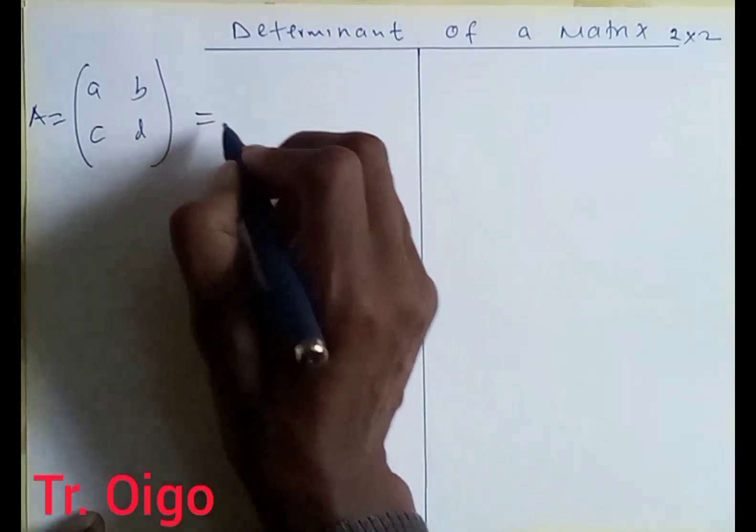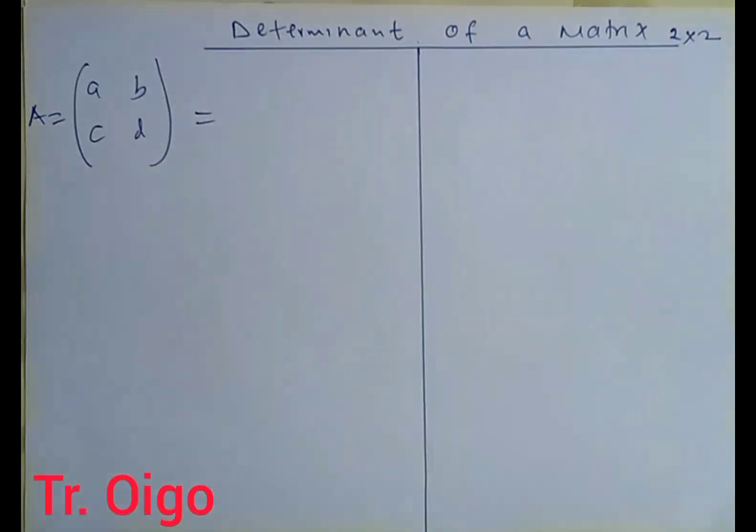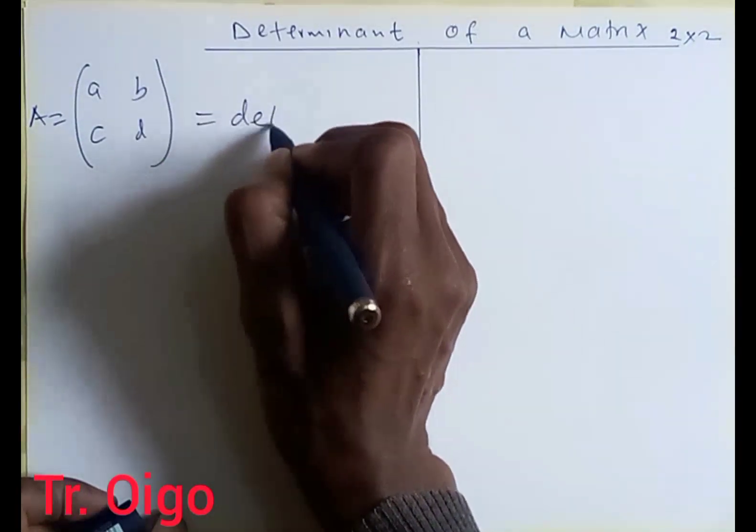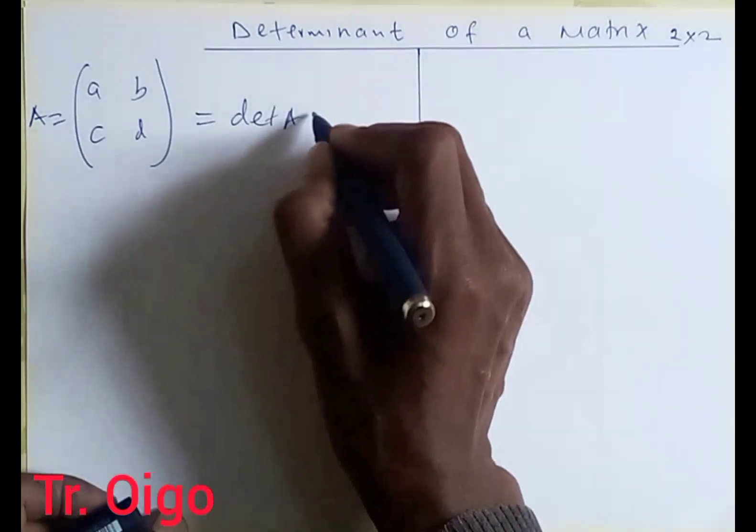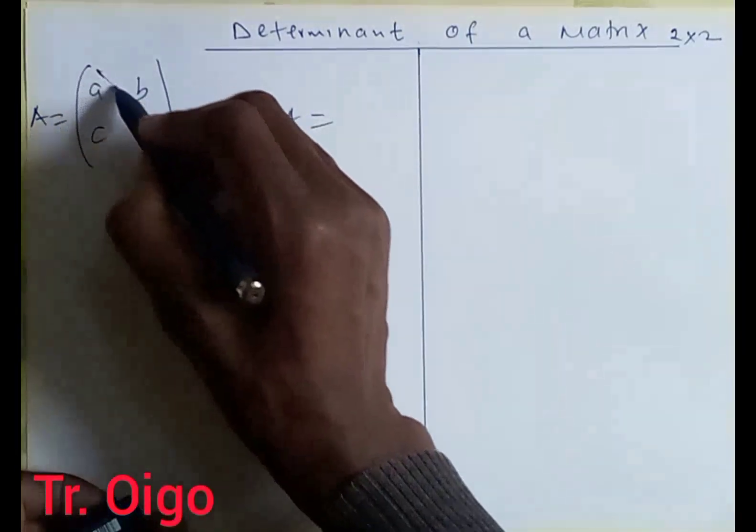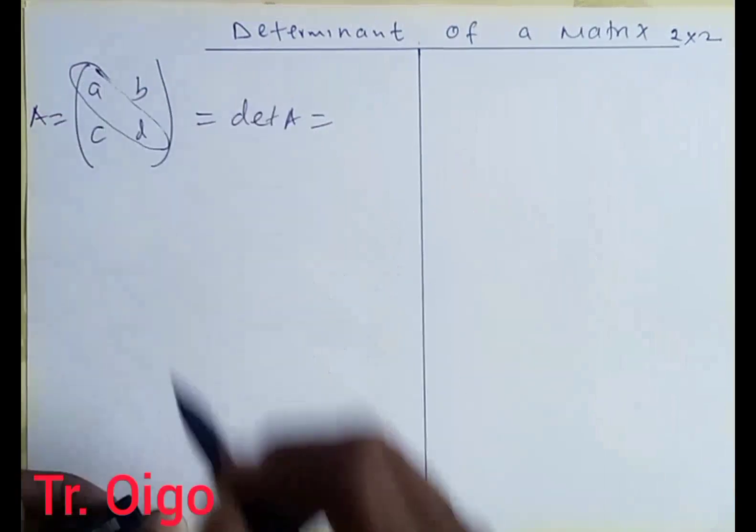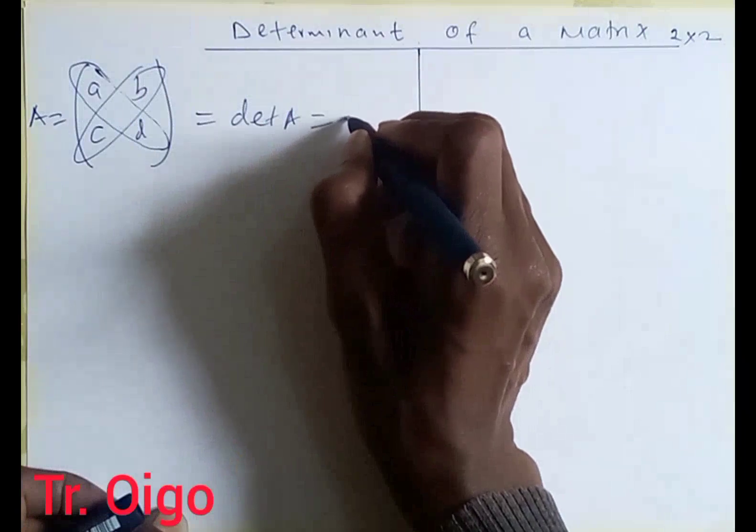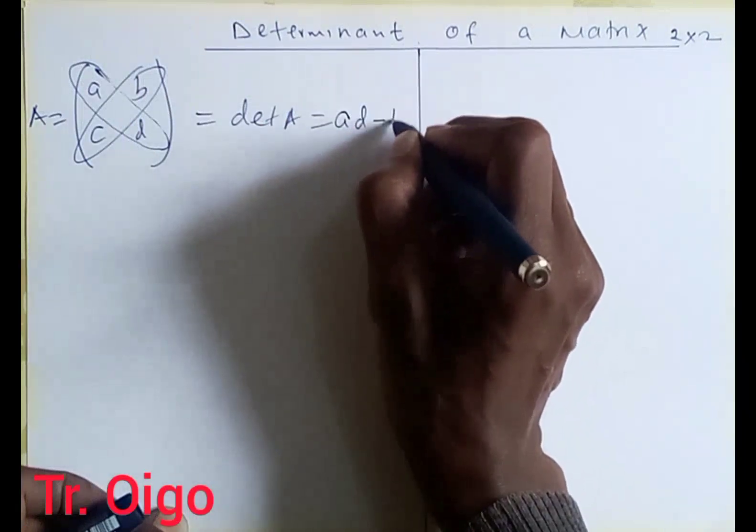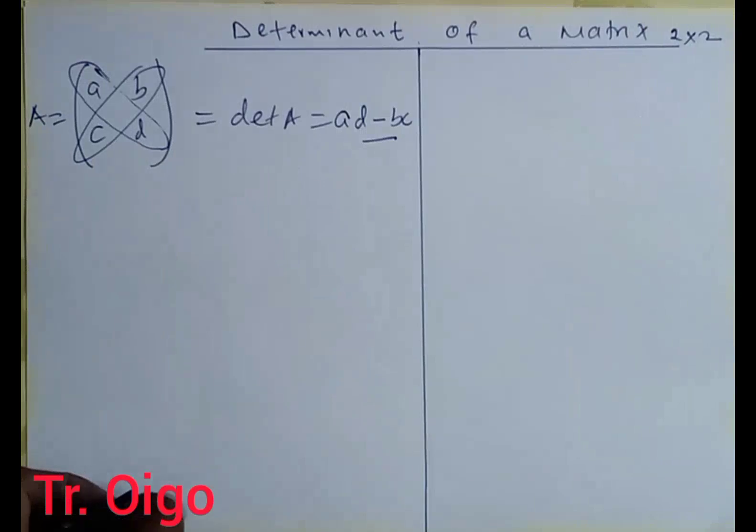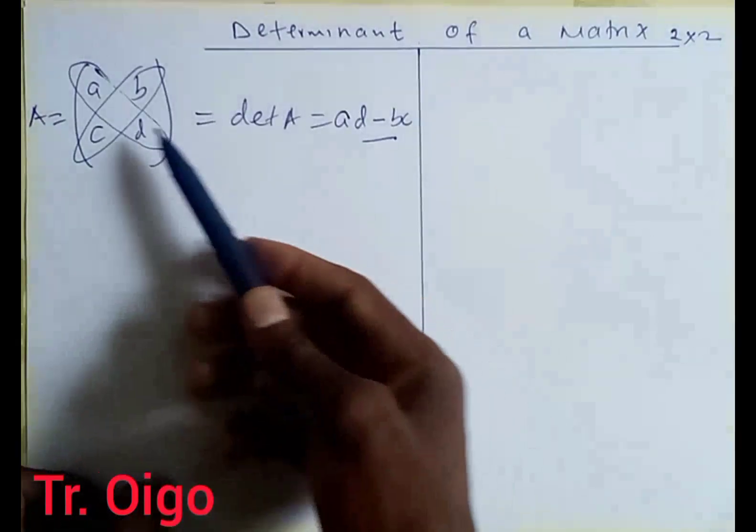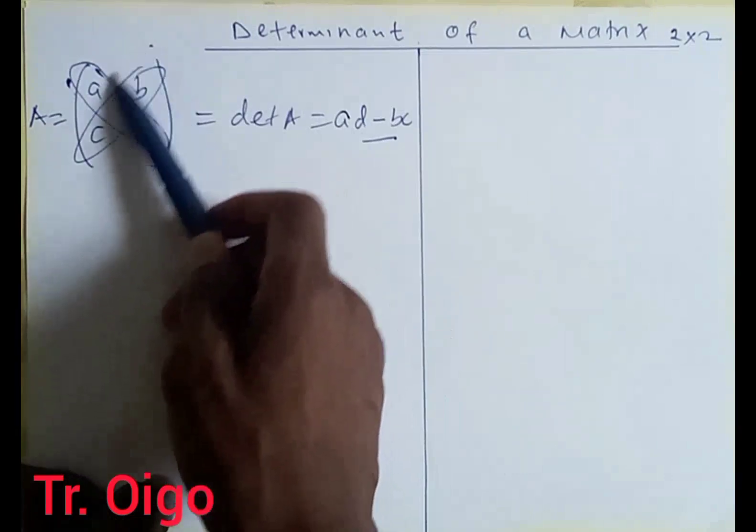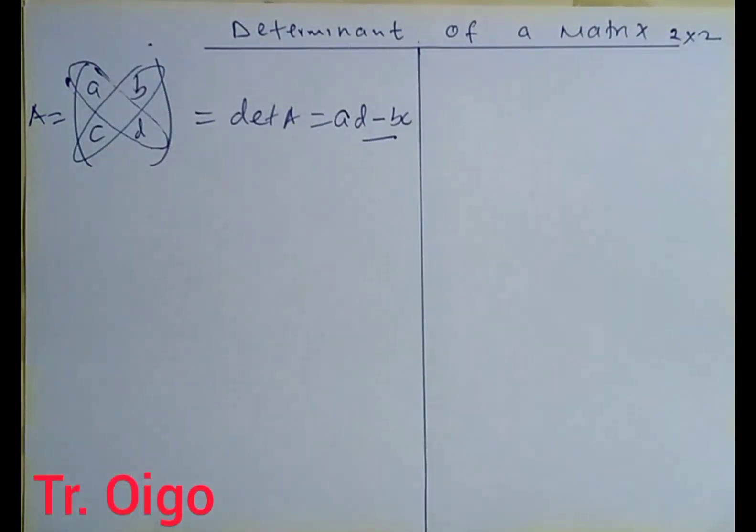Now to get the determinant of this particular matrix, you are going to say that determinant of A is equal to, you take the leading diagonal, this is the leading diagonal, minus the other diagonal. So for this case it's going to be AD minus BC. That's how we get the determinant. The determinant of any matrix is the product of the leading diagonal elements minus the product of the other remaining elements.